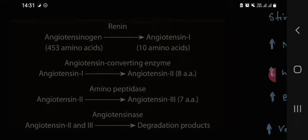Angiotensin-1 is of 10 amino acids. Angiotensin-2 is of 8 amino acids. Angiotensin-3 is of 7 amino acids.